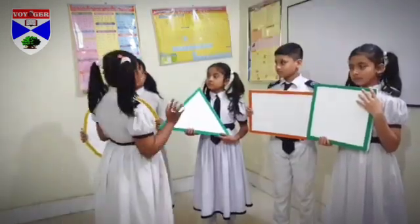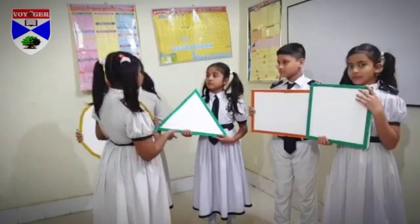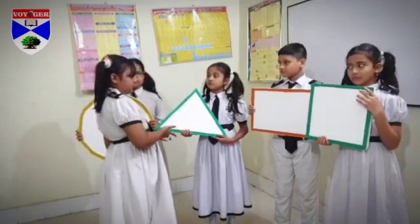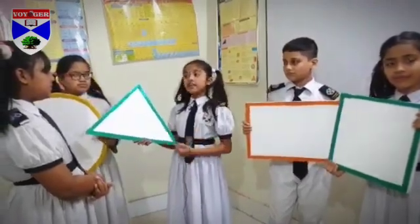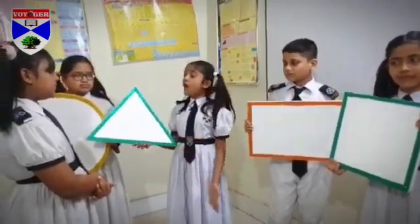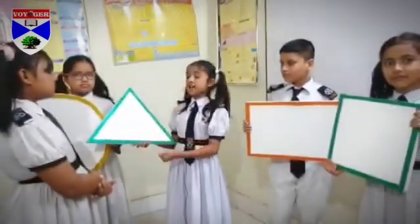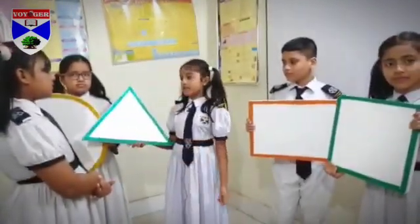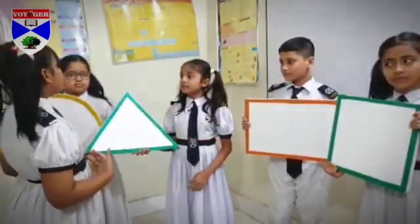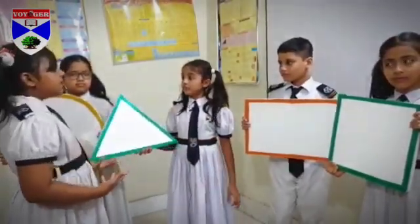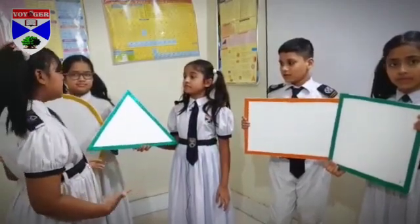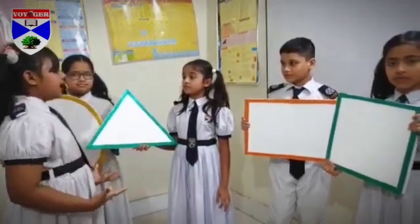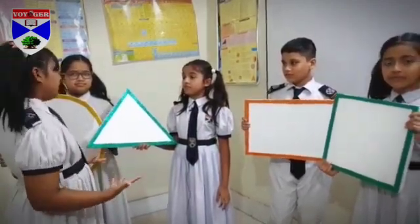Hey Roja, do you know this shape? Yes, it's a triangle shape because it has three sides and three corners. Well, name some objects around us which have this shape.